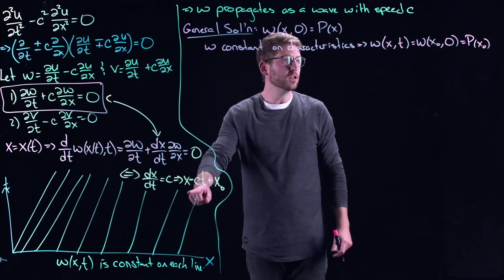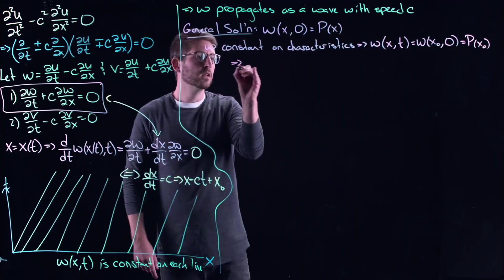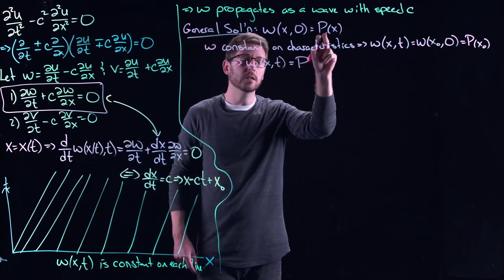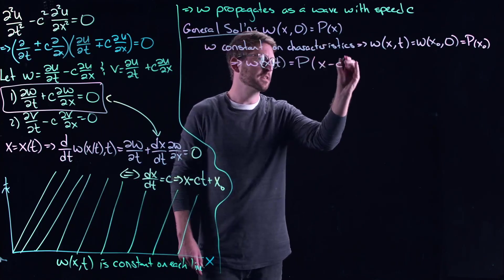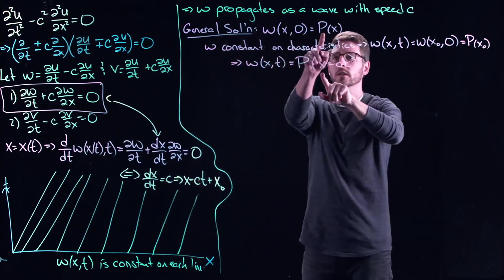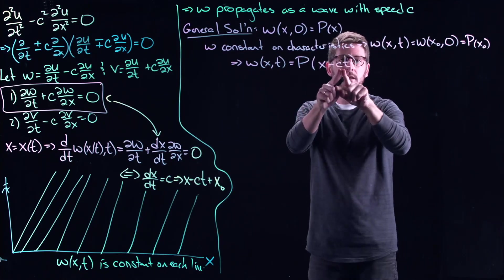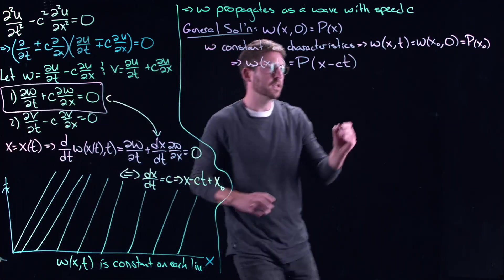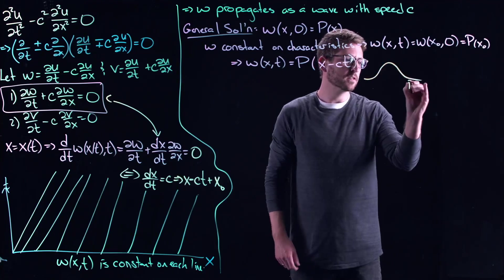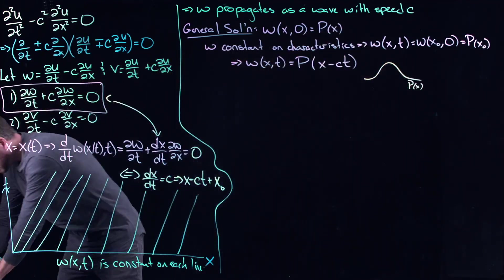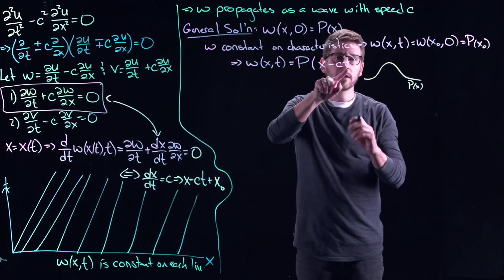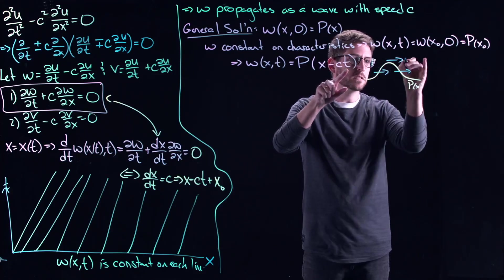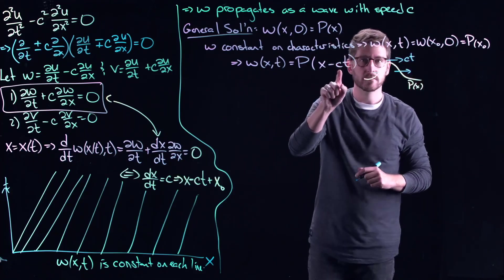And now what I can do is rearrange this equation to get that w as a function of space and time equals just the original profile p, and then x minus ct. So when t equals zero, I get the initial condition back. And essentially all that's happening here is I'm just shifting the original solution. So imagine maybe p looks like a little Gaussian, for example. So this is my p of x function. All that's happening, if I run the clock, if I allow time to go forward, everything is just moving forward at exactly the same speed of ct. It's moving to the right because c is positive.